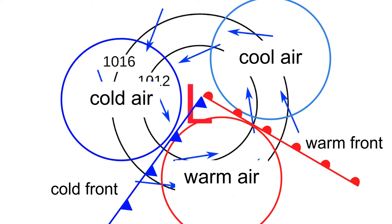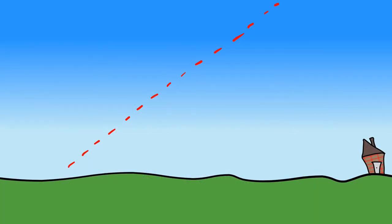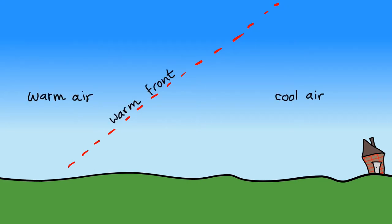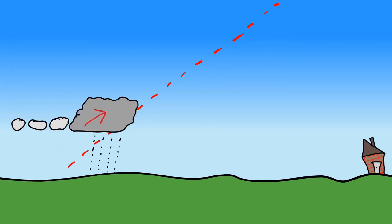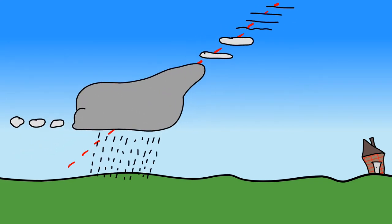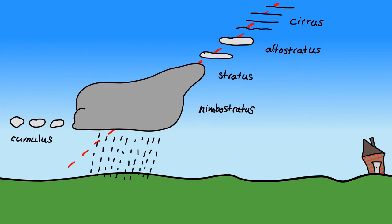Now let's look at what clouds form at a warm front and a cold front and how that affects weather, using an animation. In the previous lesson, I explained how clouds form due to frontal uplift. You'll have warm air separated by the cool air — that's what you call a warm front. The warm air will come in and be pushed up because it's lighter, and then clouds will form. You'll have cirrus first at high altitudes, then altostratus, then stratus, and then nimbostratus, and finally cumulus.